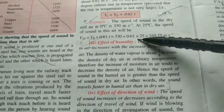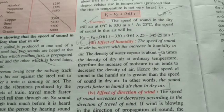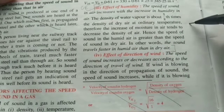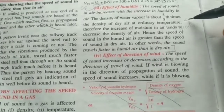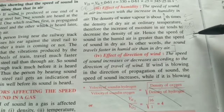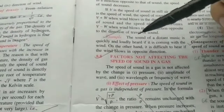Third, effect of humidity: surprisingly, dry air is denser than moist air, because water vapor has less density than oxygen and nitrogen combined. So humid air, being less dense, allows higher speed of sound. Fourth, effect of direction of wind: if the wind blows in the same direction as the sound is traveling, it increases the speed of sound. If the wind blows in the opposite direction, it decreases the speed of sound. The final speed is either the addition or subtraction of the two velocities.